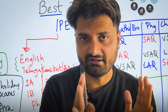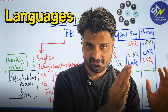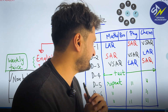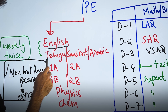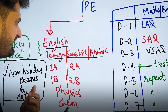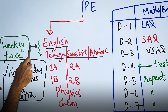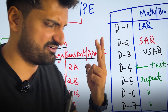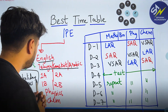First, we need to divide into two parts: languages and core subjects. Languages include Telugu, English, Sanskrit, or Arabic — two languages, with English mandatory and Telugu, Sanskrit, or Arabic as your second language. For languages, twice a week spend around two hours — one hour for English and one hour for the second language. That is more than enough.